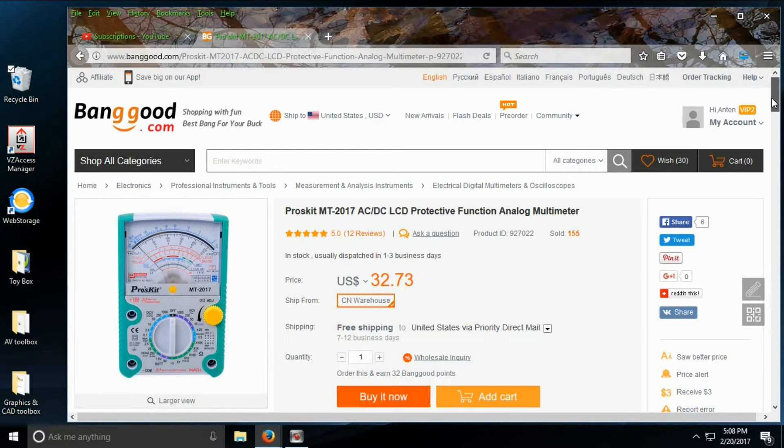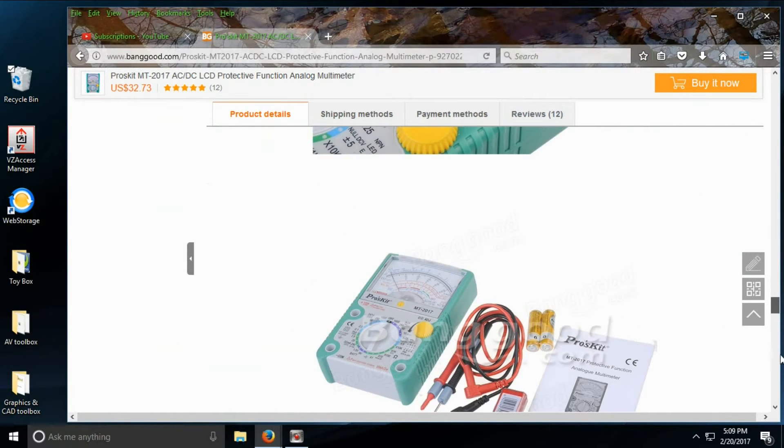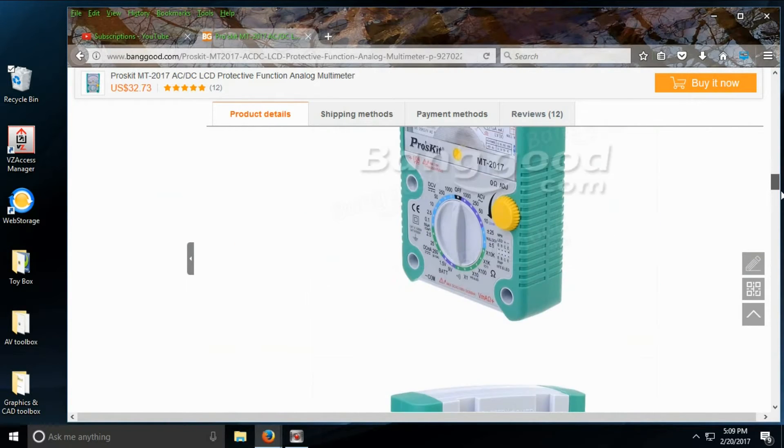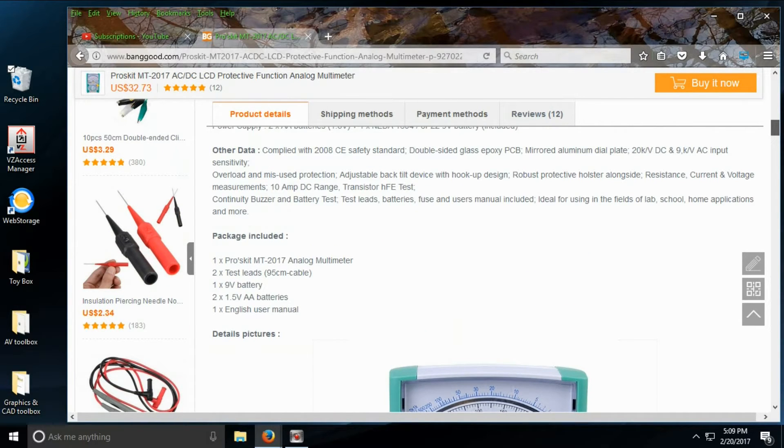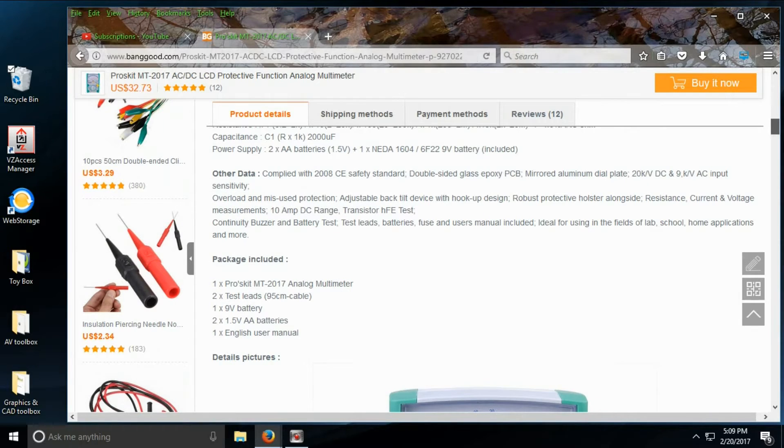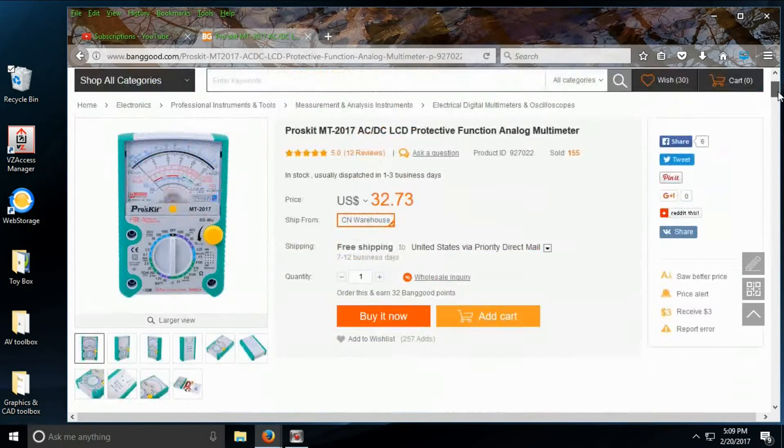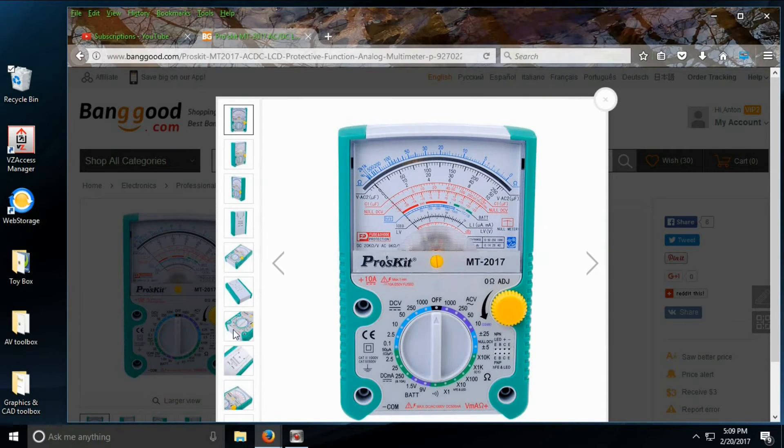This is the meter on the Banggood site. Usual Banggood stuff. Not a whole lot of information here. Those come with a pretty good manual. Well, decent manual. A little bit of English in there. Probes are pretty good, as I mentioned in the review. Safety standard, I guess. All the features here. There's the blow-up.